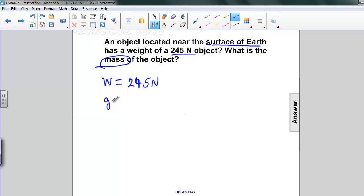The acceleration due to gravity is given to us because it says it's near the surface of the earth, so that's 9.8 meters per second squared. And we're asked to find the mass.